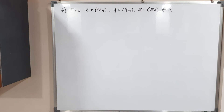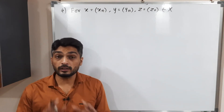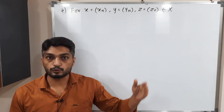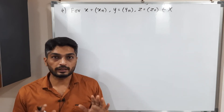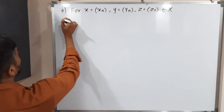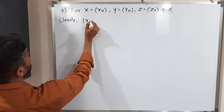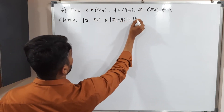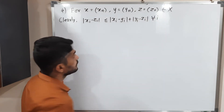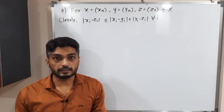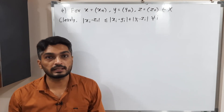Let us start the fourth property, the triangle inequality, which requires three elements. So I've taken x = (xn), y = (yn), and z = (zn), all sequences of real numbers. We can write clearly that |xi - zi| ≤ |xi - yi| + |yi - zi| for all i, since mod satisfies the triangle inequality: |A + B| ≤ |A| + |B|. More explicitly, |xi - zi| = |xi - yi + yi - zi| ≤ |xi - yi| + |yi - zi| for all i.